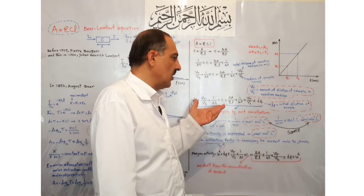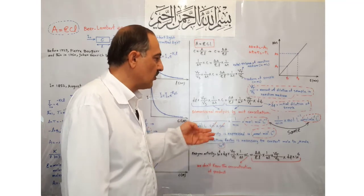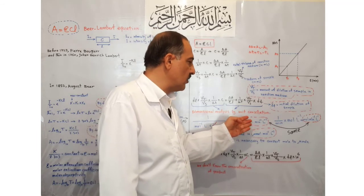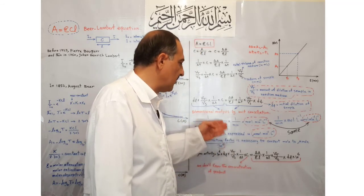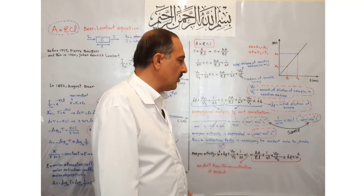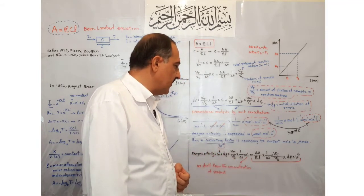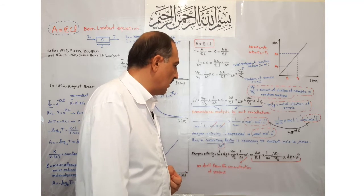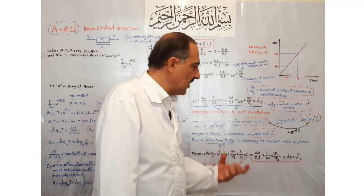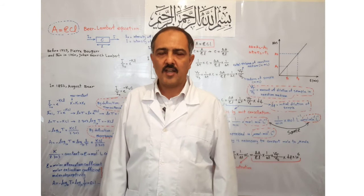Enzyme activity is expressed in micromoles per minute per liter, so we need a correction factor to convert moles to micromoles — that factor is 10⁶. Both sides of this equation should be multiplied by 10⁶. The left side of this equation is not directly useful since we don't know the concentration of product formed. Instead, we can use the right side of this equation for calculation of enzyme activity.